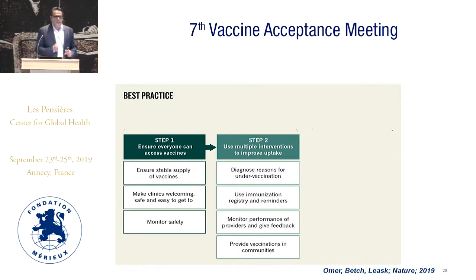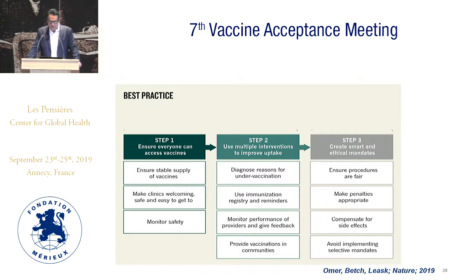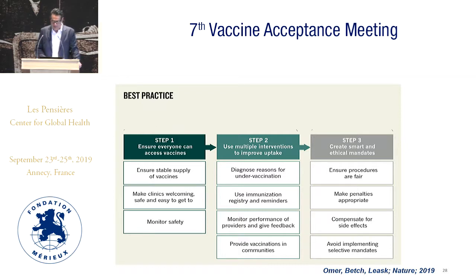The second step is to use multiple interventions — that's super important. Mandates don't absolve jurisdictions and governments of a comprehensive program; they're not a cop-out. And specifically in low-income settings, mandates should never be used as an excuse to blame communities as a whole or pass on the responsibility of the health system.